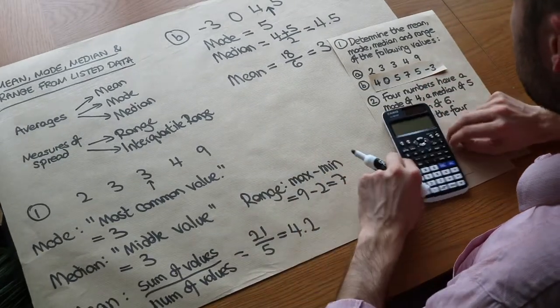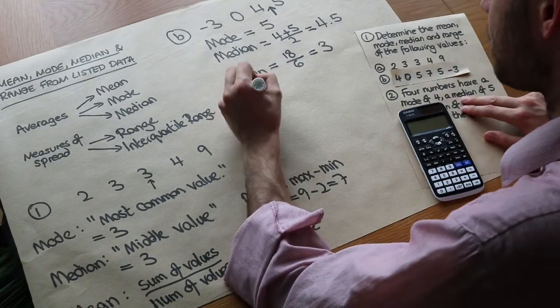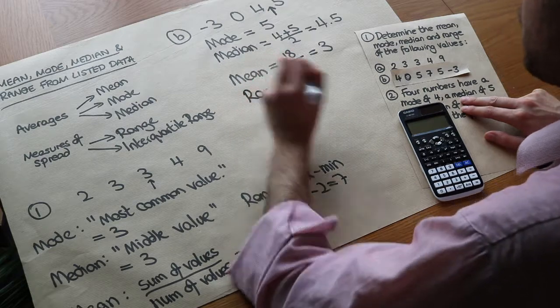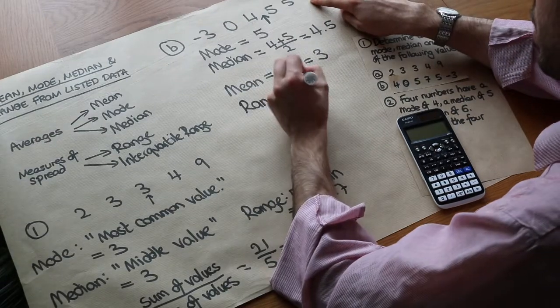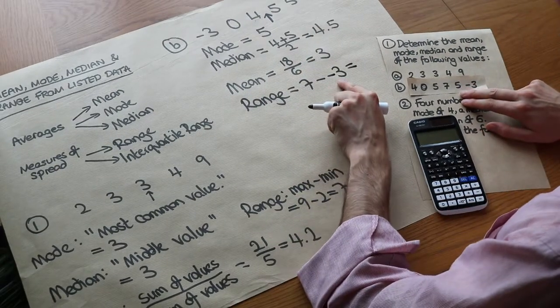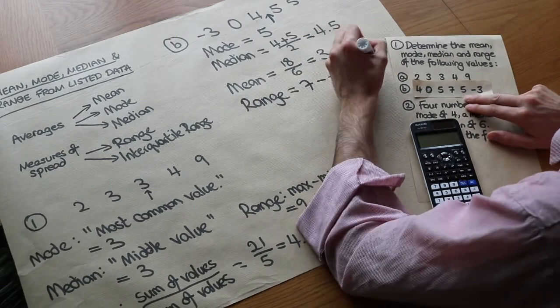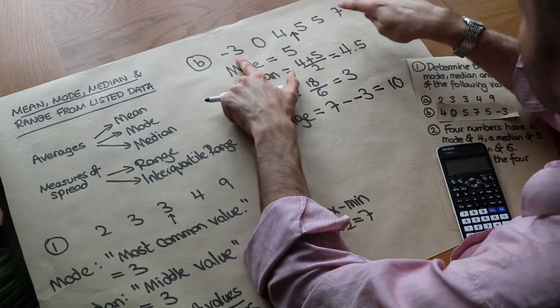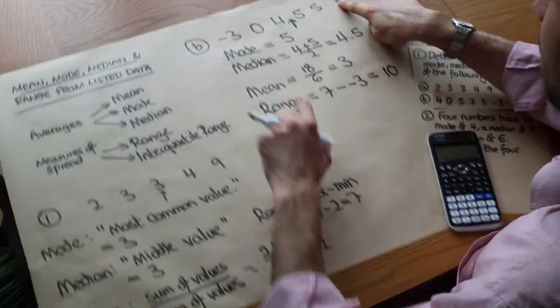That's a way you might be able to remember those. We finally got the range which is the maximum value 7 subtract the smallest value minus 3. Now 7 minus negative 3 is 7 plus 3 which is 10. We can see the difference between the smallest and the largest value is 10.